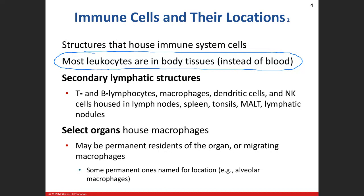We're going to discuss some of the structures that are going to house these leukocytes. When we talk about secondary lymphatic structures, we include lymph nodes, spleen, tonsils, MALT — that's the mucosal associated lymphatic tissue, usually associated with the digestive system — and then some of the lymphatic nodules.